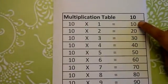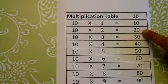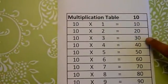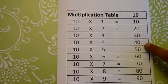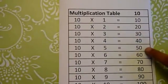10 1s are 10, 10 2s are 20, 10 3s are 30, 10 4s are 40, 10 5s are 50,